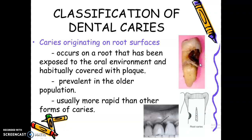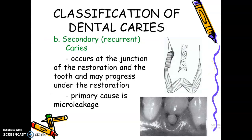Take note that you can only get root surface caries if the root is already exposed in the mouth. This is very common in older or geriatric patients, because they develop periodontal disease and the roots become exposed — and with poor oral hygiene, nagkaroon ng cavities. So primary caries is the original caries lesion.